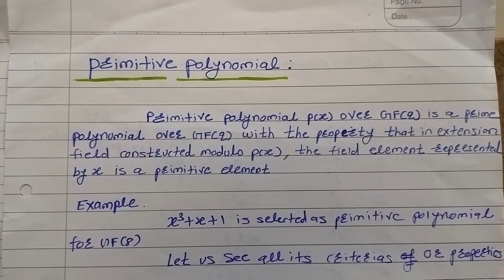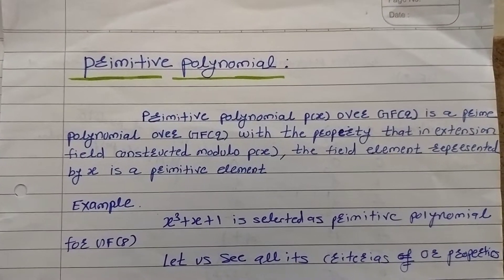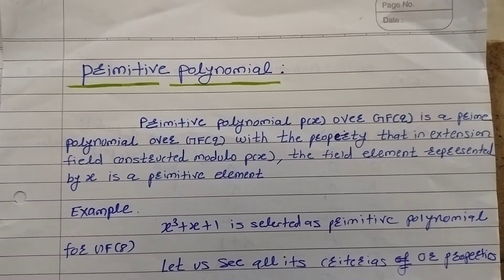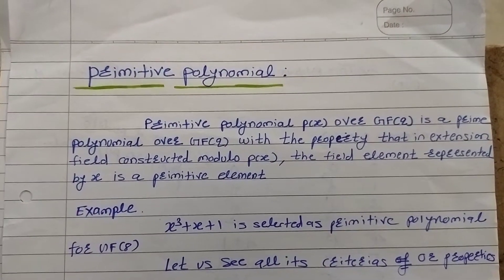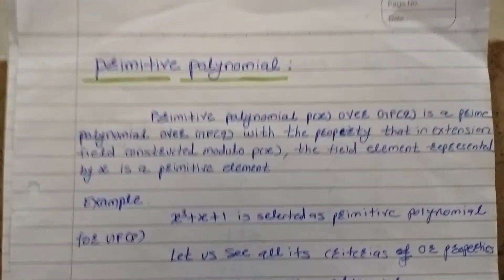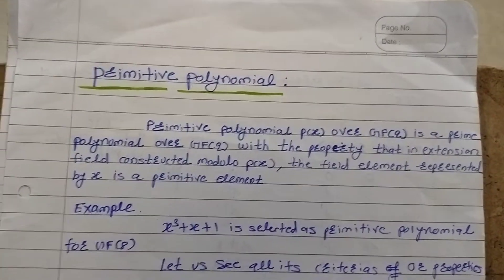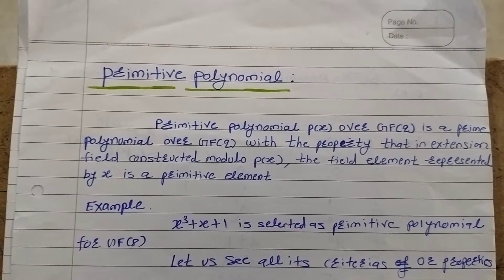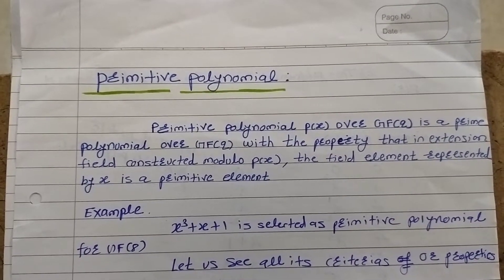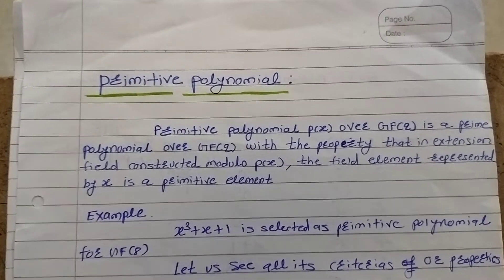Students, today we are going to see the definition of primitive polynomial. I found that students find it very difficult to understand and recall the definitions of primitive element, primitive polynomial, and minimal polynomial. These definitions are required in cyclic codes as well as BCH codes. The definition of primitive element was already covered on this channel — you can check that.